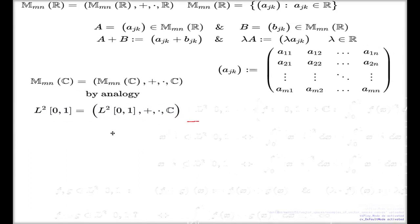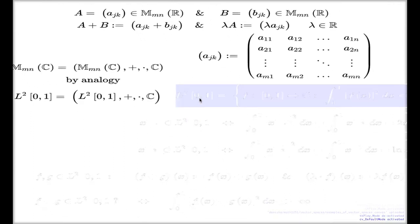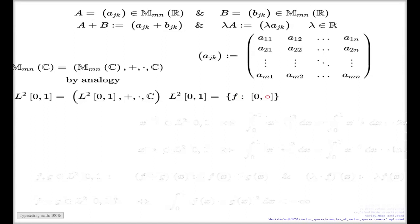Let's just see what kind of object is this. Here it is. L^2[0,1]. This is a collection of all functions on the [0,1] interval with values in complex numbers. It is a line which reads function with domain [0,1] with values, with range in complex numbers, but not all of them.